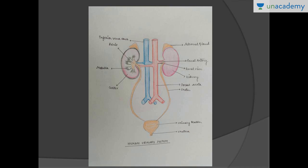The last part of the urethra is the external urethral meatus, from which urine is excreted out of the body. Also visible in the diagram are the renal veins and renal artery. This is basically a highly simplified diagram of the human excretory system.